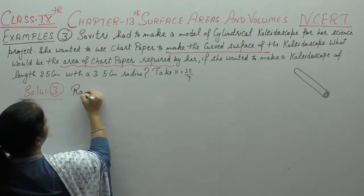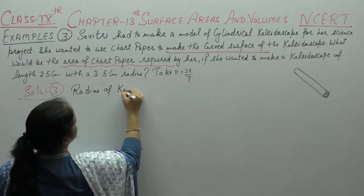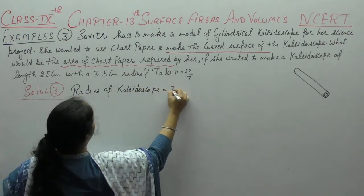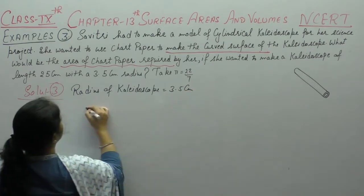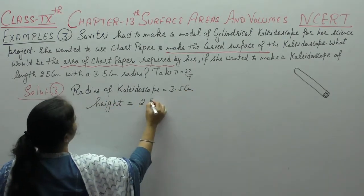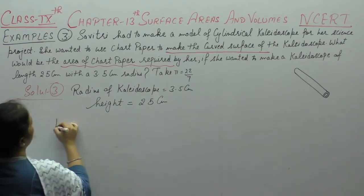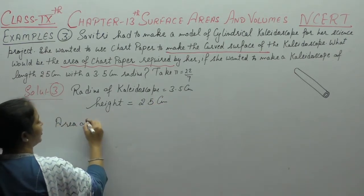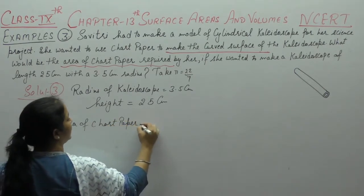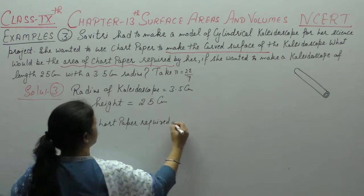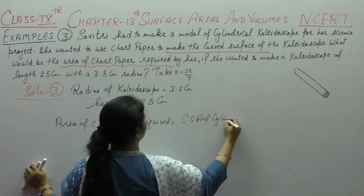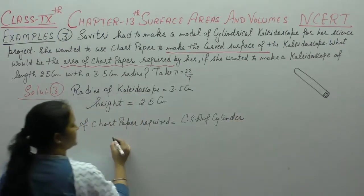Radius of kaleidoscope is 3.5 cm. Height, in the cylinder case, what is the length? Height. Area of chart paper required is equal to curved surface area of cylinder. Because it is which shape? Cylinder.